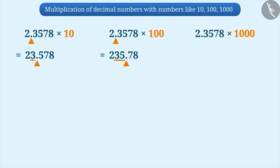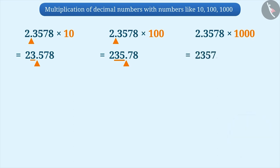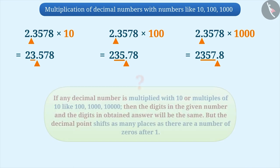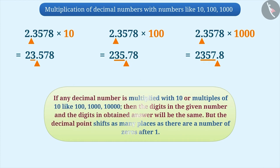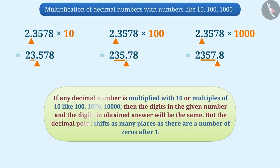Can you obtain the value of 2.3578 multiplied by 1000 without carrying out multiplication? The digits will remain the same, but the decimal point will be shifted three places to the right. So, if any decimal number is multiplied by 10 or multiples of 10 like 100, 1000, or 10,000, the digits in the given number and the answer will be the same, but the decimal point shifts as many places as there are zeros after the one.